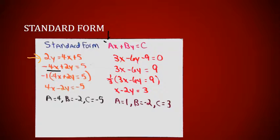But that minus 4X is violating one of my rules: A needs to be positive. So I can multiply the whole equation by negative 1. As long as I'm applying the same operation to everything in the equation, I will still have a true statement. When I multiply by negative 1, I change all the signs and get 4X minus 2Y equals minus 5. I have now put this in proper standard form, where A equals 4, B equals minus 2, and C equals minus 5.